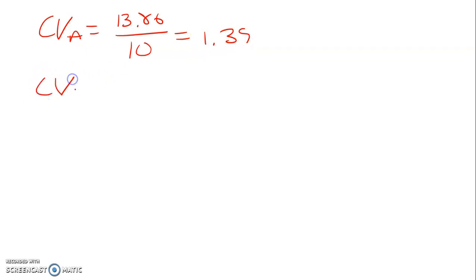Coefficient of variation for B is going to be the standard deviation of 8.72 divided by the expected return. And that is 0.51.